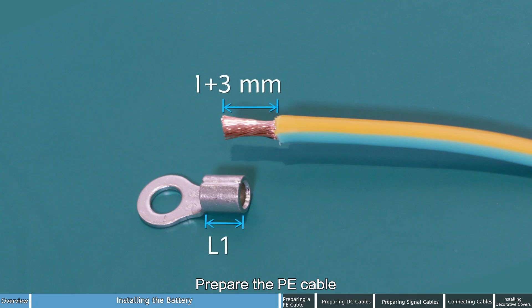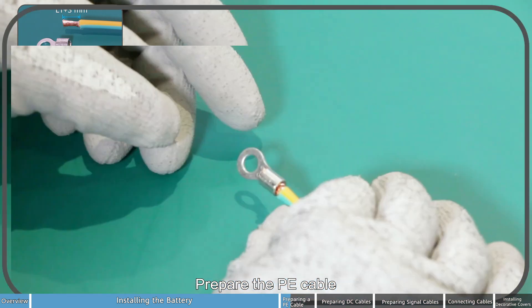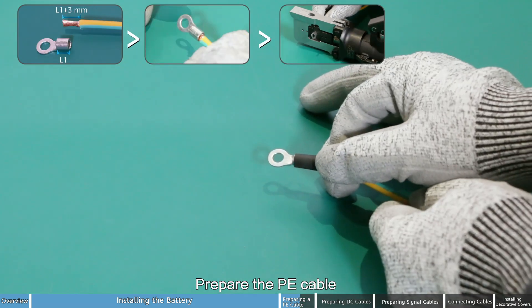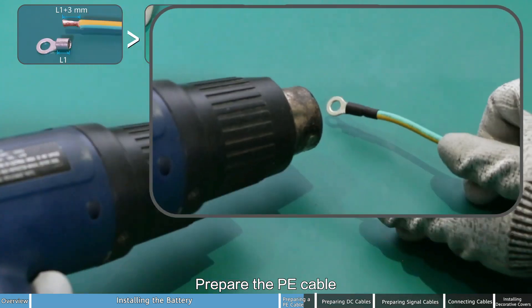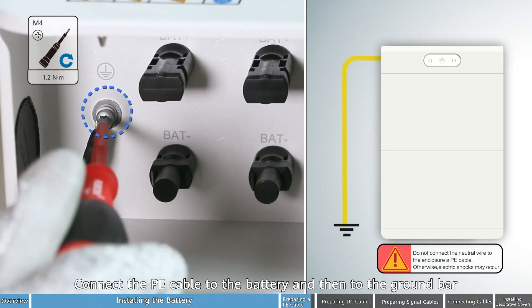Prepare the PE cable. Connect the PE cable to the battery and then to the ground bar.